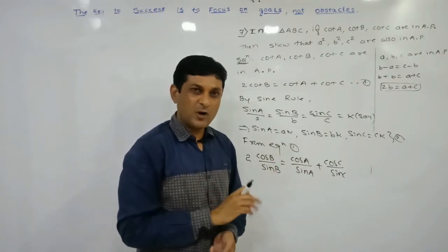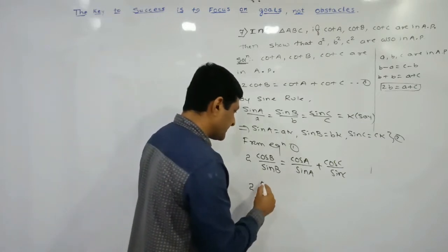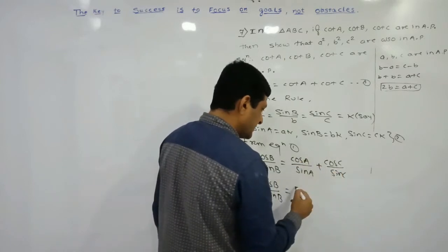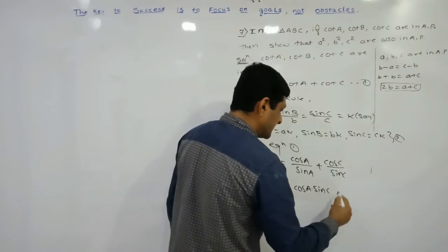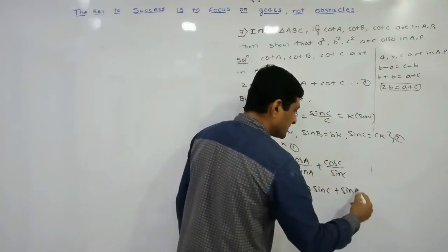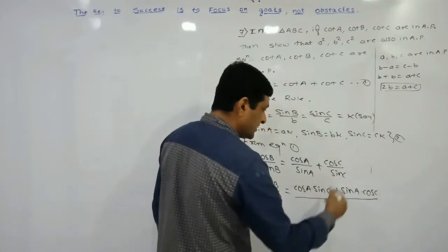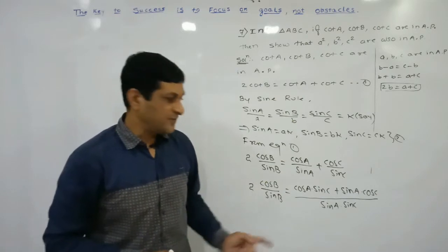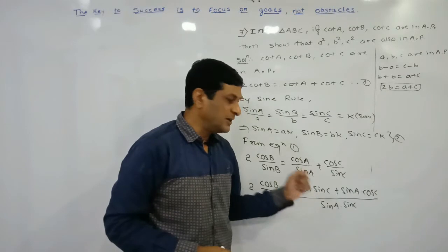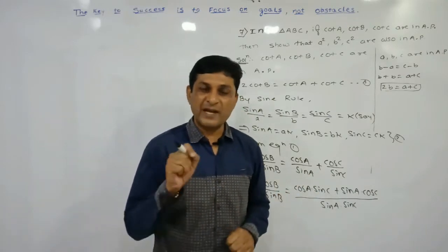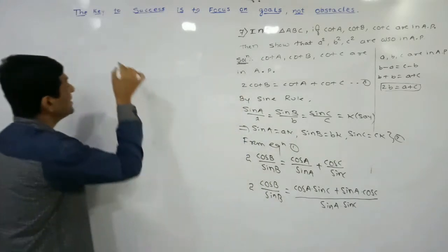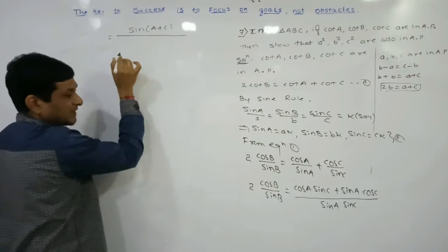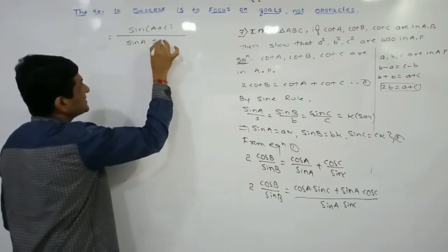Keeping the left-hand side 2·cos B / sin B as it is, on the right-hand side we take cross multiplication. We get: (cos A · sin C + sin A · cos C) / (sin A · sin C). Observing the numerator carefully, it is in the form sin A · cos C + cos A · sin C, which equals sin(A + C) by the compound angle formula.